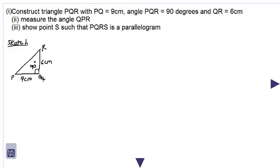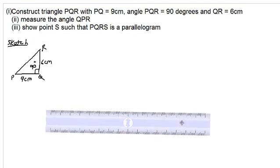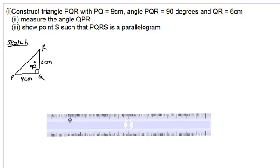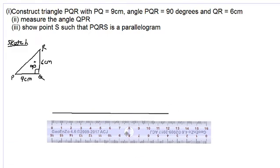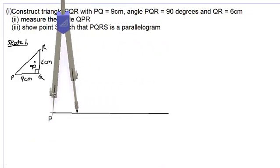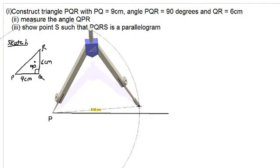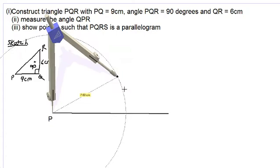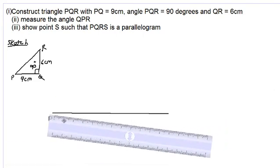So we want to construct this object first. Let's go ahead and get our long ruler and draw a line — a baseline — that is more than 9 centimeters long, so about 12. Now let us label point P and take our compass out, place the point at point P, stretching out the compass until we have 9 centimeters. Remember that we are using the ruler to ensure that we have 9 centimeters.